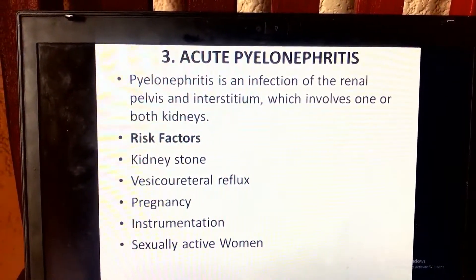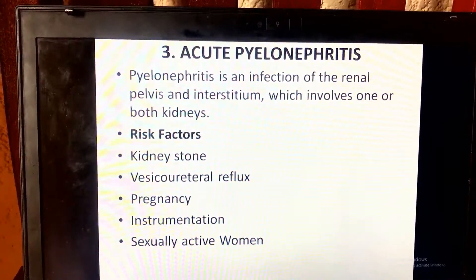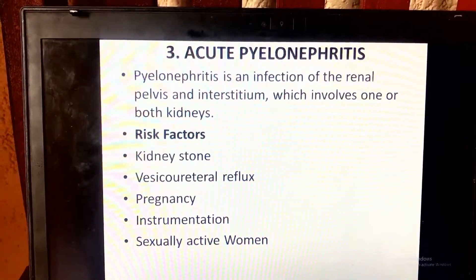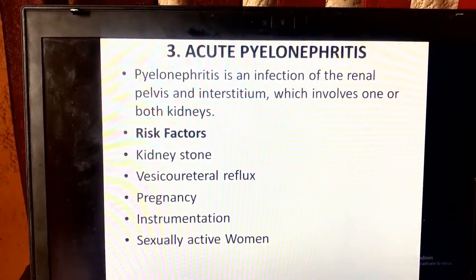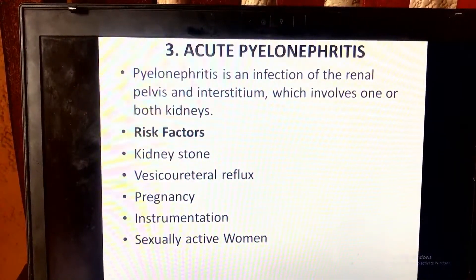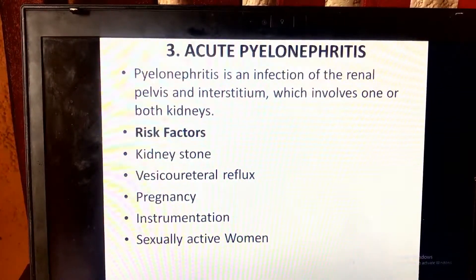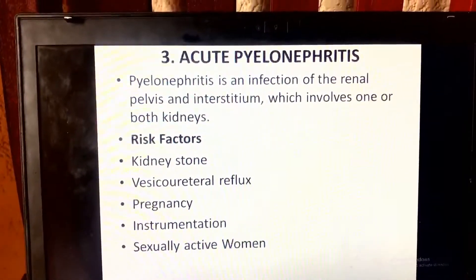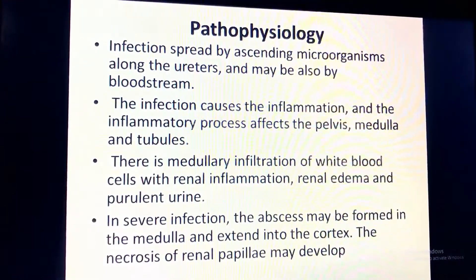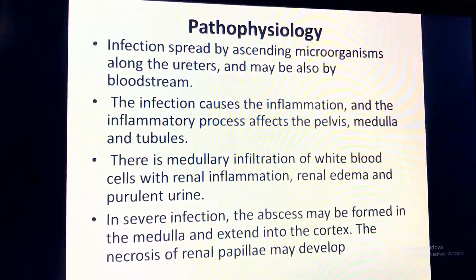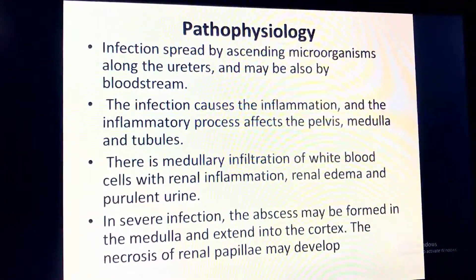Let's look at acute pyelonephritis. Pyelonephritis is an infection of the urinary pelvis and parenchyma, involving one or both kidneys. Risk factors include kidney stones, vesicoureteral reflux, pregnancy, instrumentation, and sexually active women. The infection spreads by ascending microorganisms along the ureters and possibly also via the bloodstream.